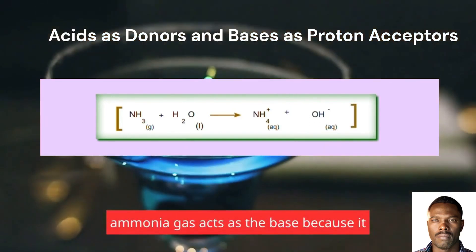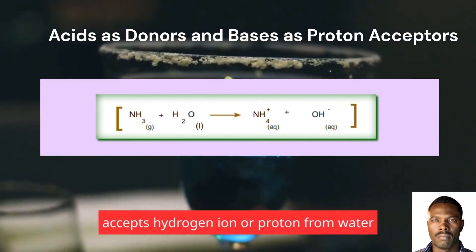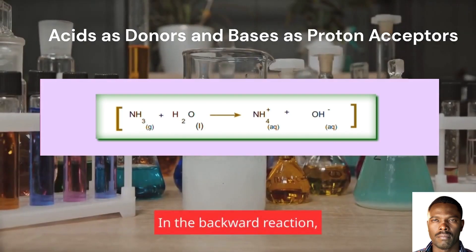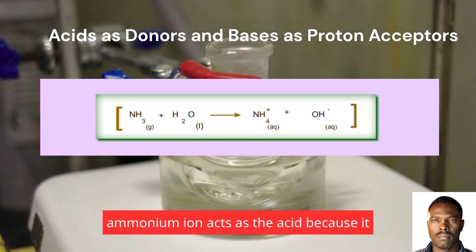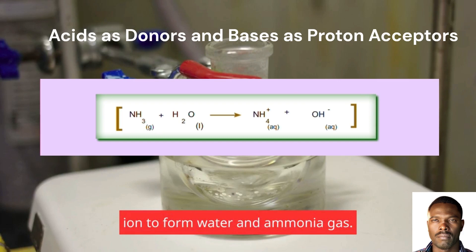In the above equation, ammonia gas acts as the base because it accepts a hydrogen ion or proton from water in the forward reaction to form ammonium ion. In the backward reaction, ammonium ion acts as the acid because it donates hydrogen or proton to the hydroxide ion to form water and ammonia gas.